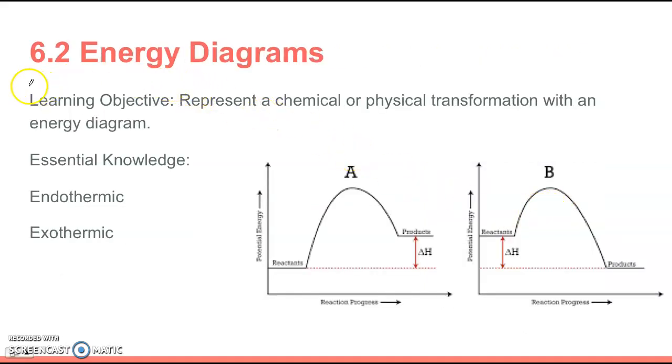Section 6.2 is on energy diagrams. The learning objective is represent a chemical or physical transformation with an energy diagram. The essential knowledge for this section is you want to be able to look at an energy diagram, which there's two of them shown over here, and determine what's endothermic or exothermic, or be able to draw one of these.